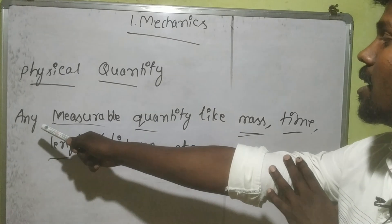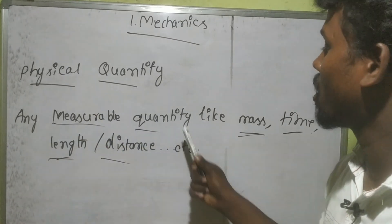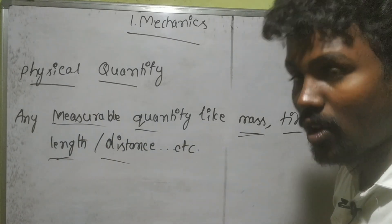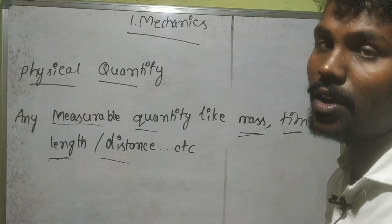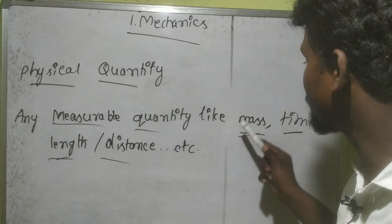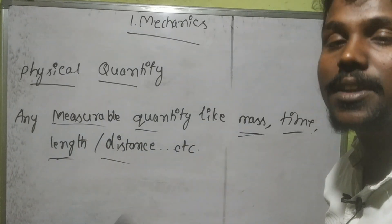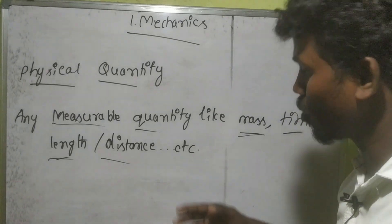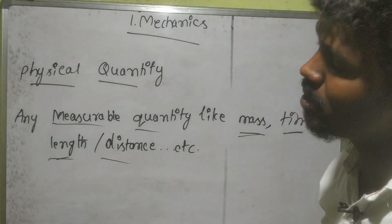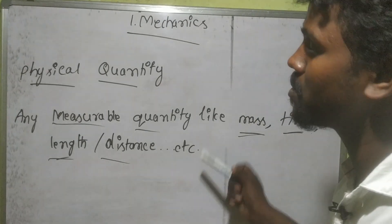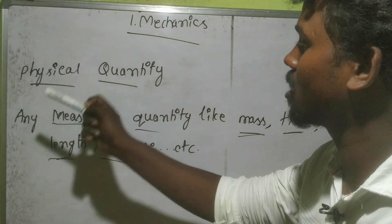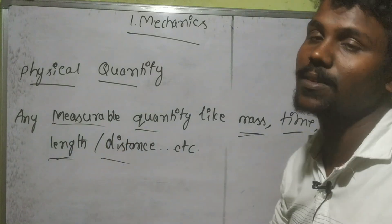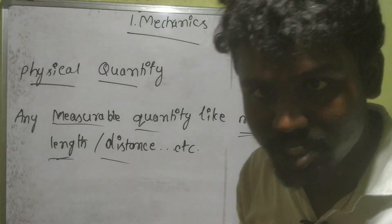Any measurable quantity we can call a physical quantity. For example, mass, time, and length — we can measure all of these. So that covers the concept of physical quantity.